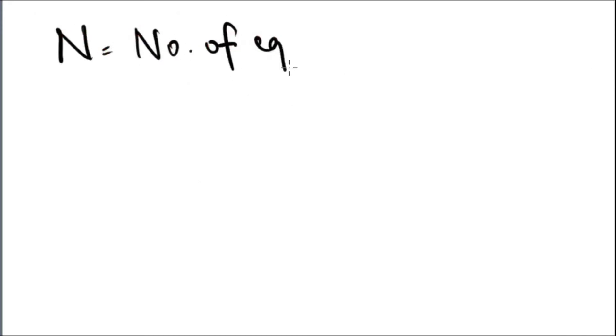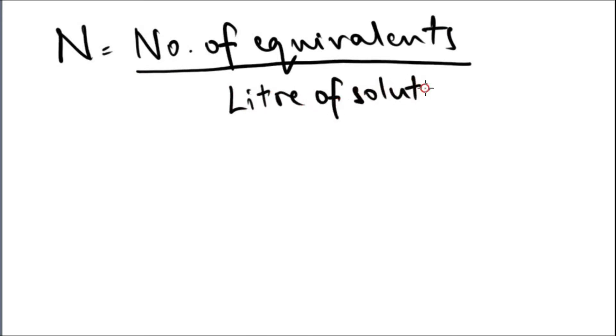Normality is number of equivalents per liter of solution. Now equivalence, it depends on the formula of the molecule and it depends on the number of moles involved in the reaction.